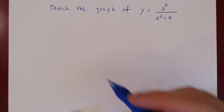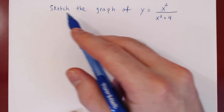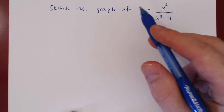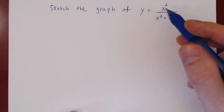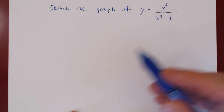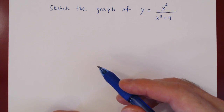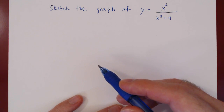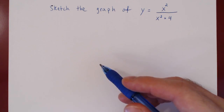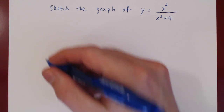In this video, we are going to sketch a graph of the rational function y equals x squared over x squared plus 4. As always, the first thing we need to find are the first and second derivatives.